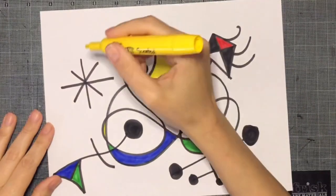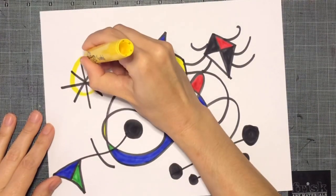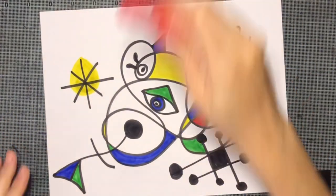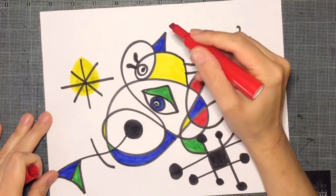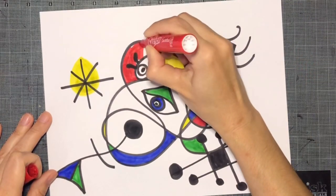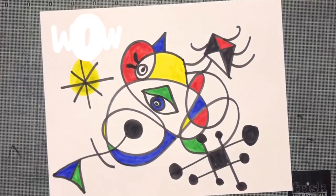When you think you are done, take a look at your drawing again and see what other color you'd like to add. I'm going to add this yellow on top of my star, and some red on this section over here. I think I'm done now.